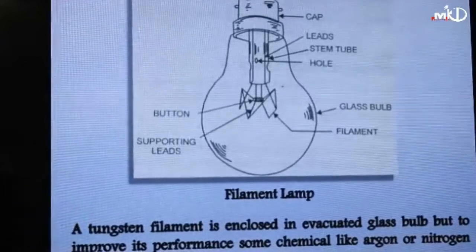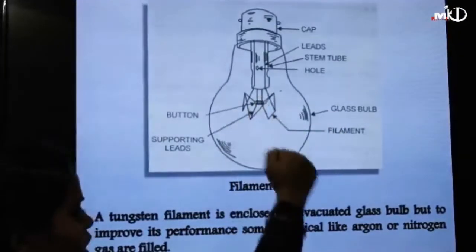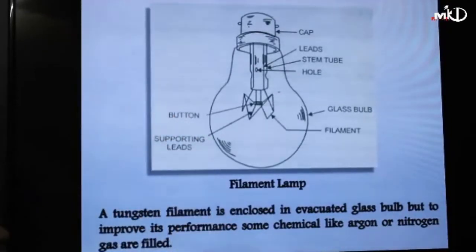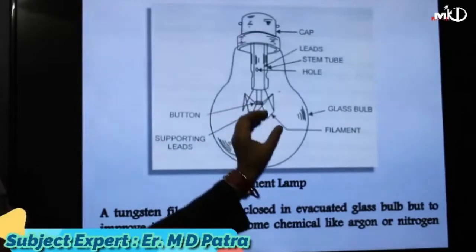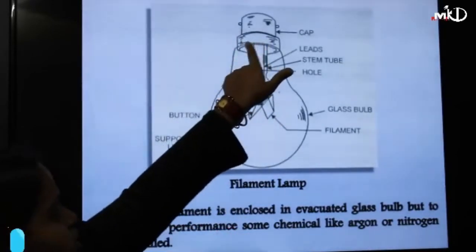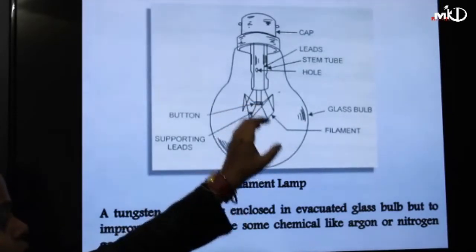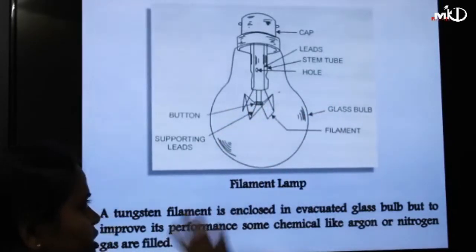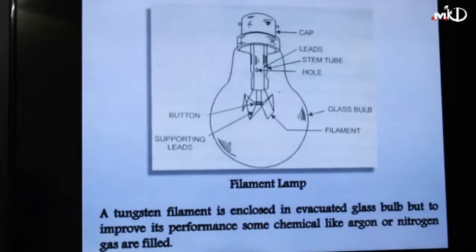Some chemicals like argon or nitrogen gas are also filled inside the glass bulb. Due to those gases the light is produced. When current flows through the filament, heat energy is produced within it and the bulb glows. The circuit has two terminals — positive and negative. When current flows, the filament gets heated, the temperature increases, and in the area where argon and nitrogen are present, the bulb glows and we see the light.